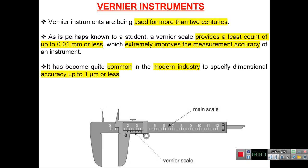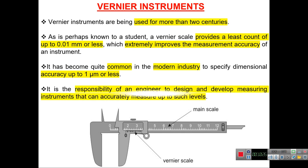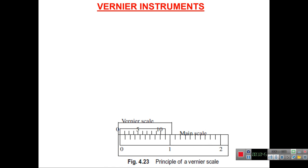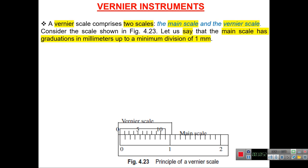It has become common in modern industry to specify dimensional accuracy up to one micrometer or less — the micron being 10 to the power minus six of a meter. It is the responsibility of an engineer to design and develop measuring instruments accurate to such levels. The vernier caliper comprises two scales: the main scale and the vernier scale.